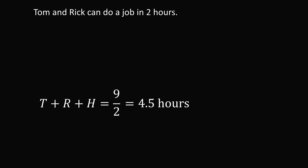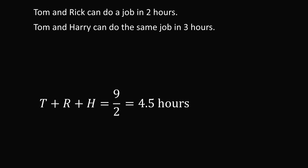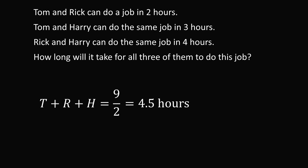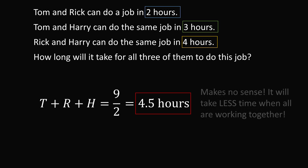But let's look at the question again. Tom and Rick can do a job in two hours. Tom and Harry can do the same job in three hours. Rick and Harry can do the same job in four hours. If it only takes Tom and Rick two hours to do the job, how is adding Harry going to make it suddenly take four and a half hours? Tom and Harry can do the job in three hours, but adding one more person takes one and a half hours longer? Rick and Harry were doing the job in four hours, but adding Tom took half an hour longer? This makes absolutely no sense. It will take less time when all three are working together, so this answer cannot logically be right.